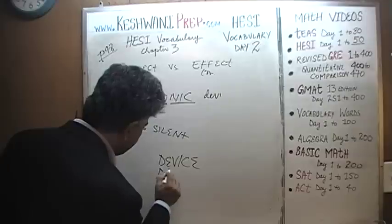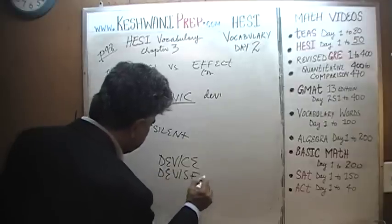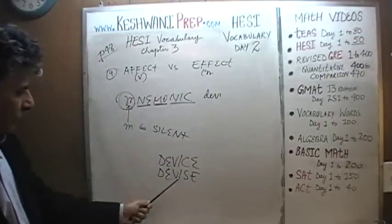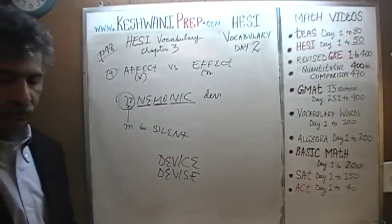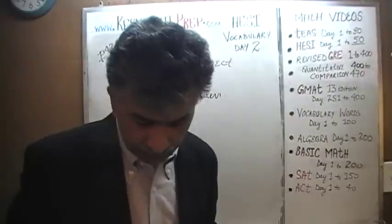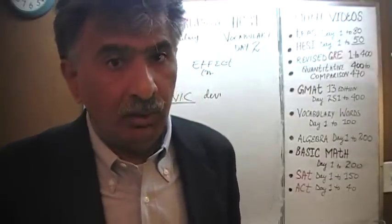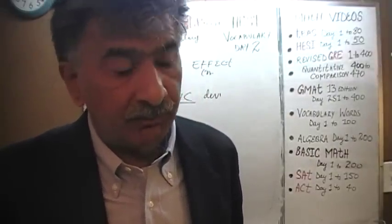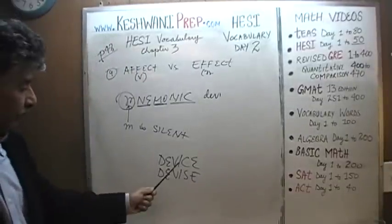This word and this word — one is a noun, one is a verb. I should not have gotten into it because now I'm making a fool of myself, because I can't remember which one is a noun and which one is a verb.